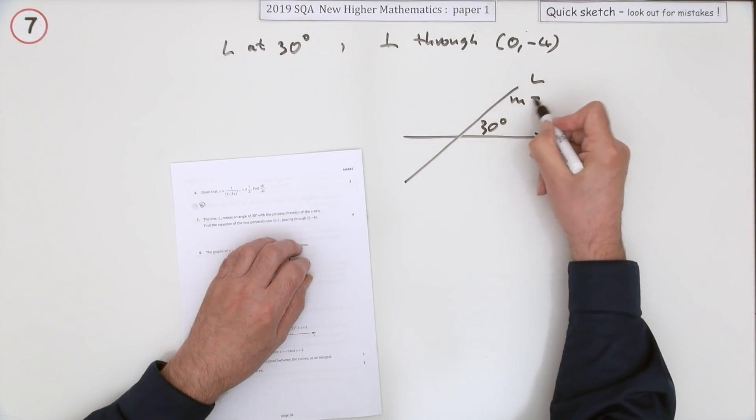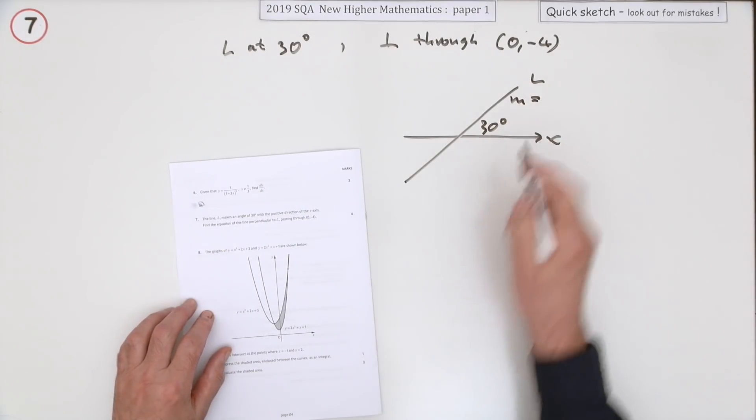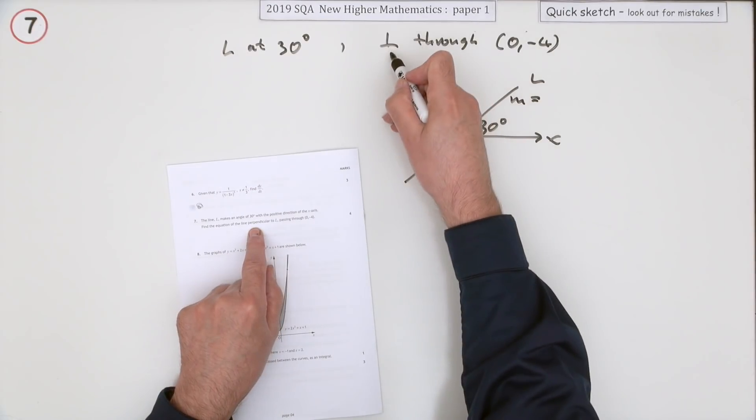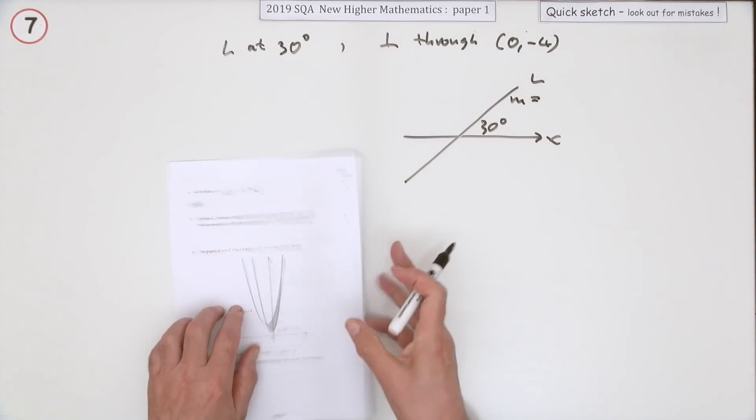That means you can get its gradient. And once you know its gradient, you can get the gradient of the perpendicular line and put it through that point.